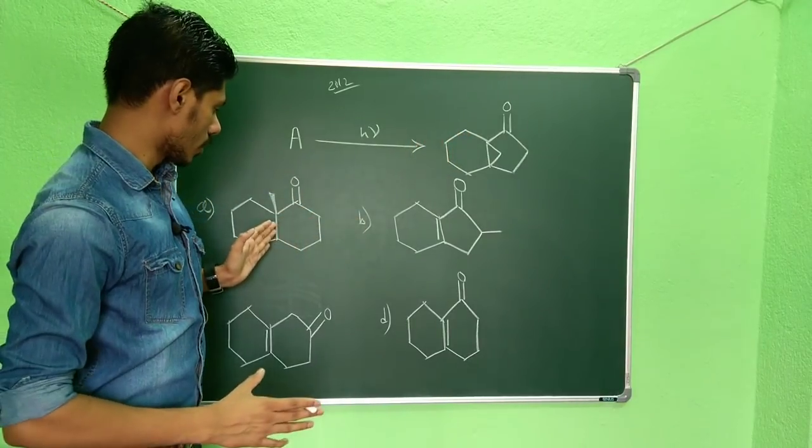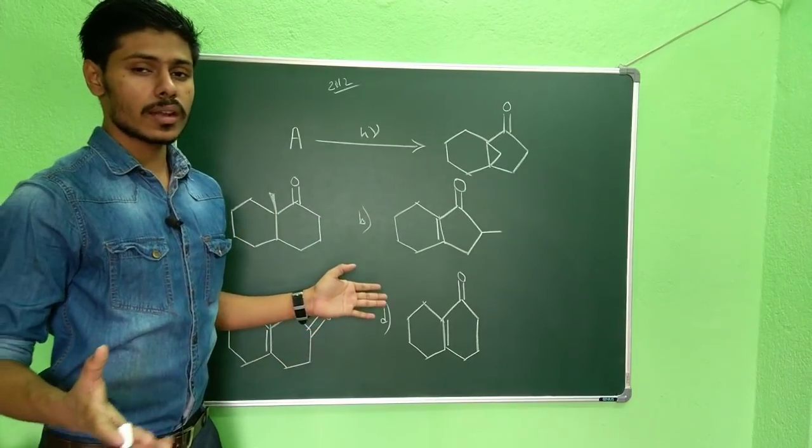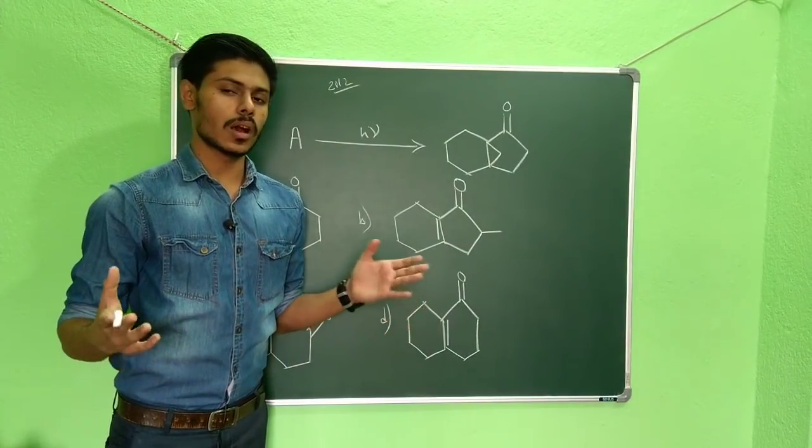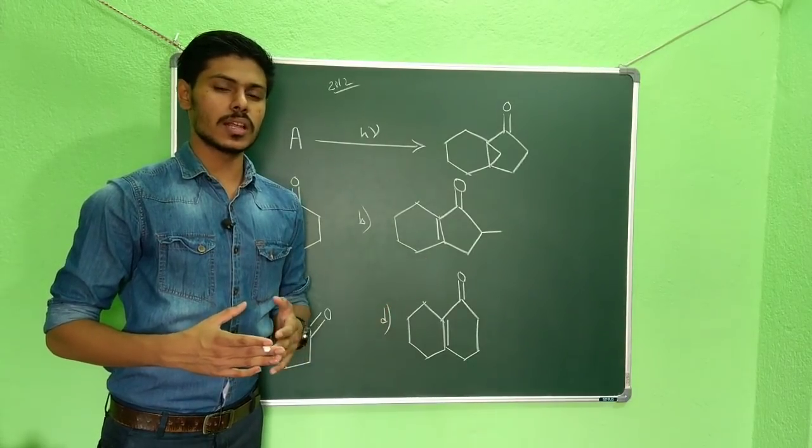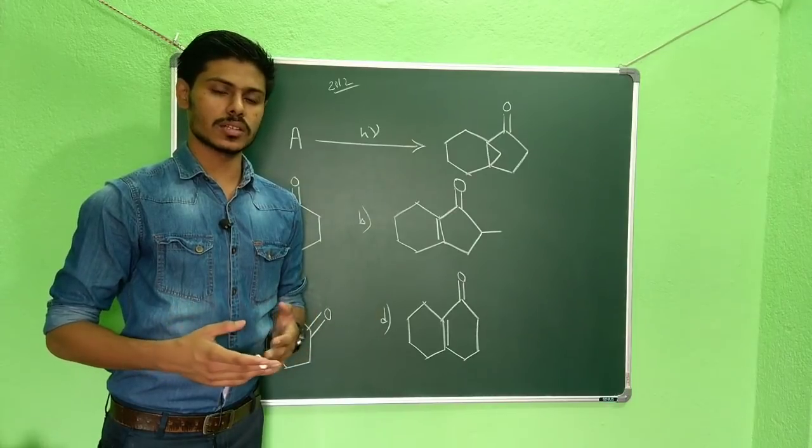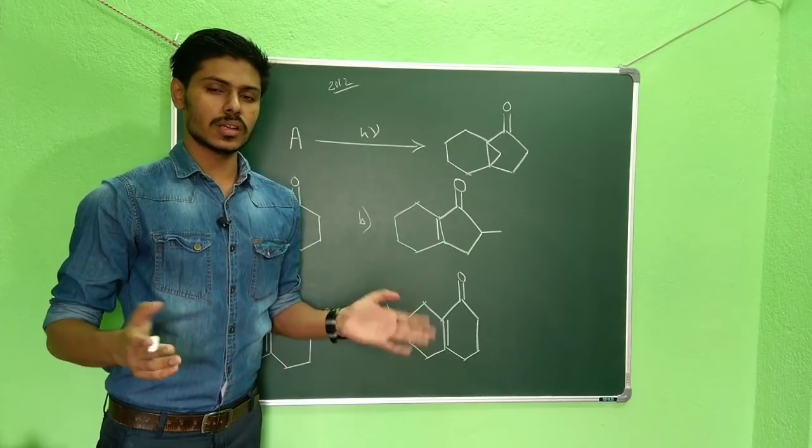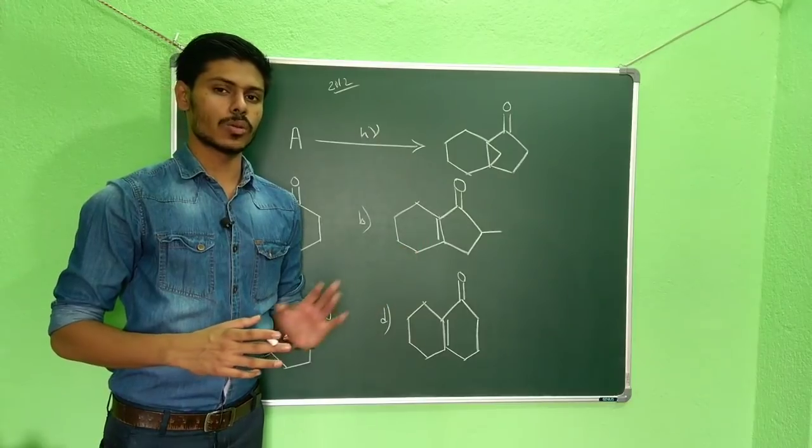And this is a photochemical reaction. As the keto group is there in the molecule you can see, or you can see also in the starting material the keto group is there, so you can easily predict that it will be a Norrish type reaction. In the question itself it is mentioned that it is a Norrish reaction, but if it is not mentioned then also you should recognize that it is a Norrish type reaction.